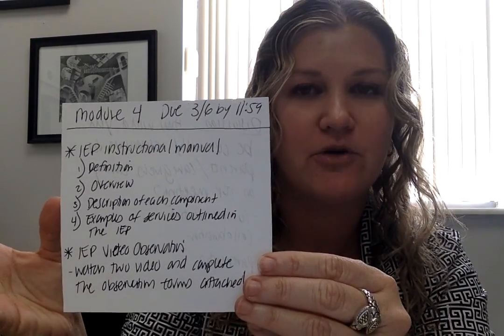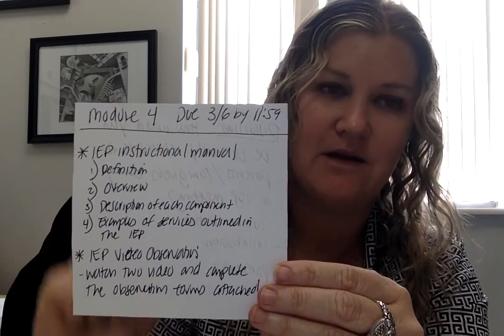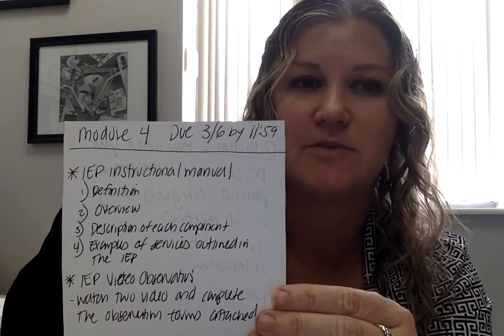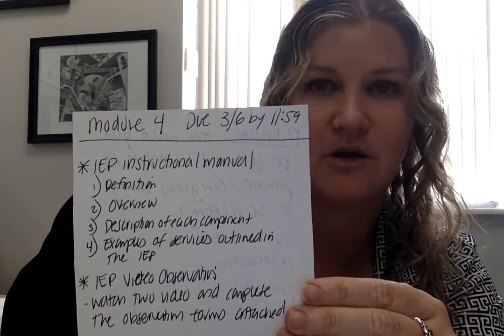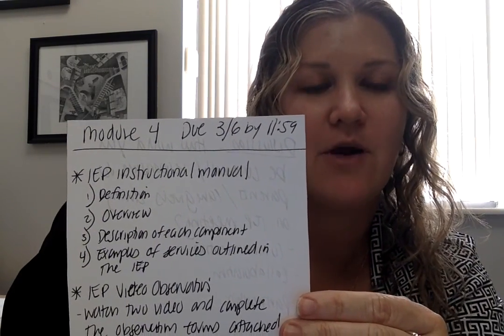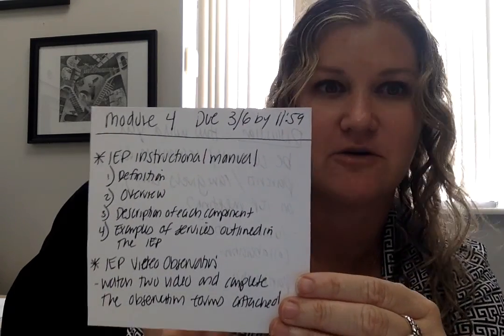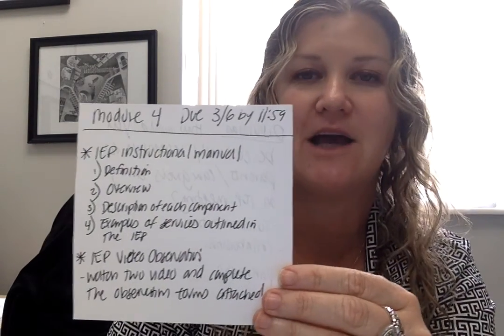In that overview, you can do part two and part three. Part three would be a brief description of each component in the IEP. And number four, I want you to give me examples of services — at least ten services that are outlined in the IEP. In the IEP, they're talking about different services and provisions for students, so give me examples of what those services might be.